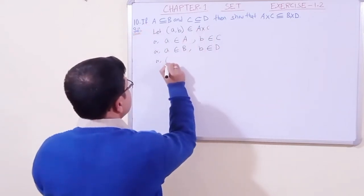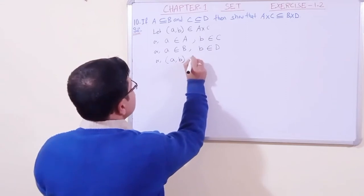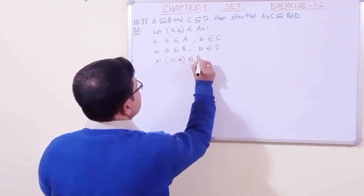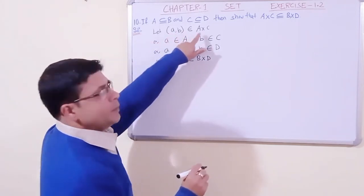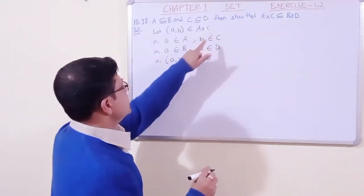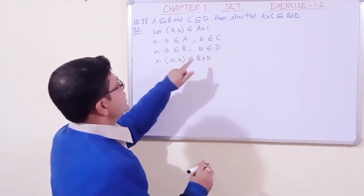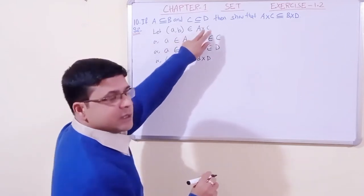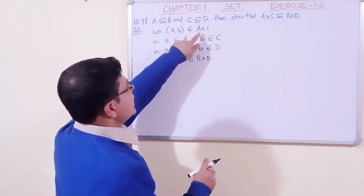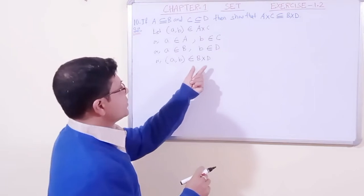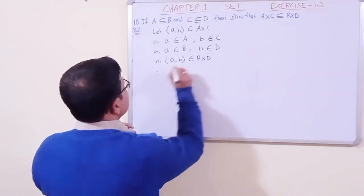Since a belongs to B and b belongs to D, we get (a,b) belongs to B×D.